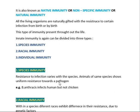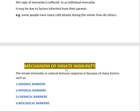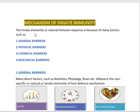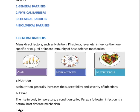Now we will discuss the mechanism behind innate immunity. The innate or natural or non-specific immunity is due to many factors: general barriers, physical barriers, chemical barriers, and biological barriers. All these barriers are obtained by natural method — from birth — which is why they all participate in innate immunity.